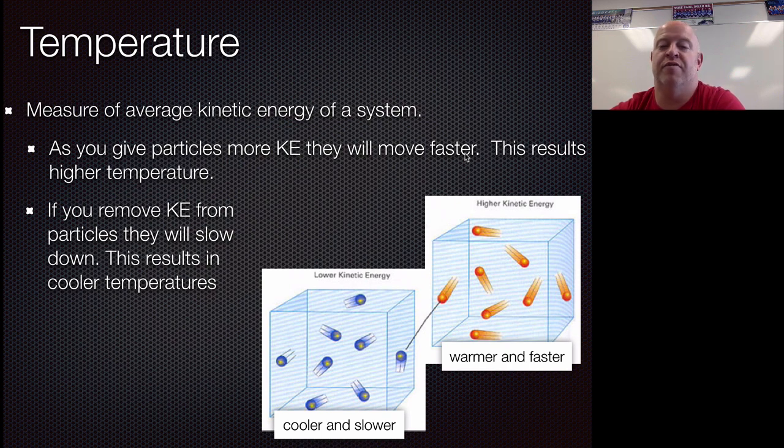Increasing kinetic energy, they move faster, making them hotter. Removing kinetic energy, they'll slow down, cooler temperatures. Now, if we remove enough kinetic energy so they get to a point where they're not moving at all, that's as slow as they possibly can move. That's our absolute zero again. So again, just a little bit of a graphic so you can visualize it.